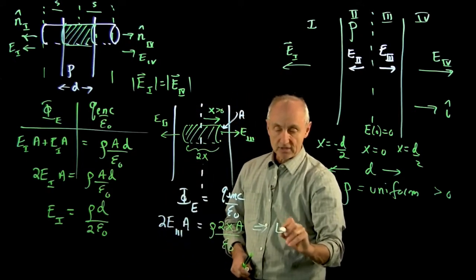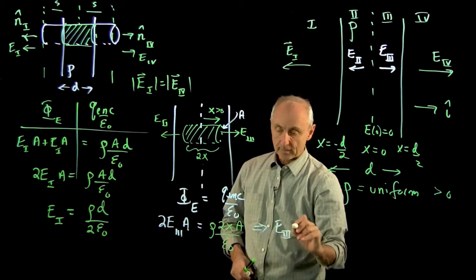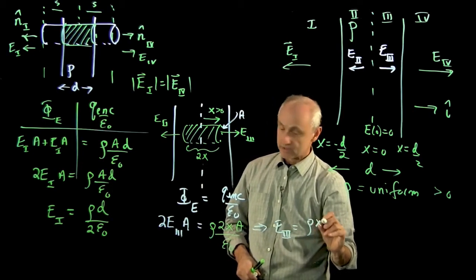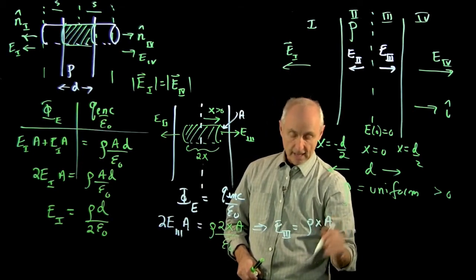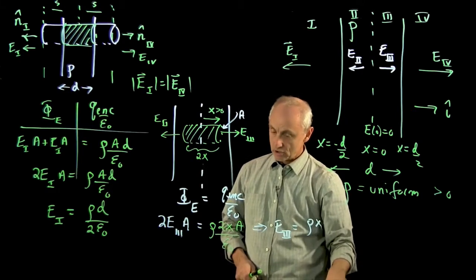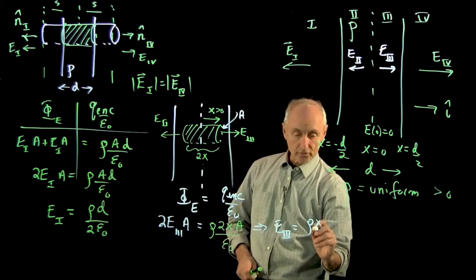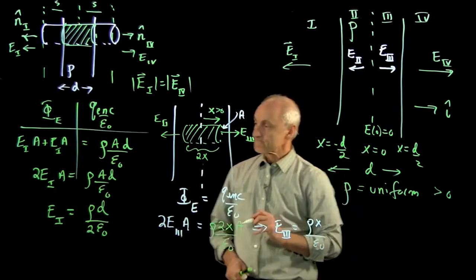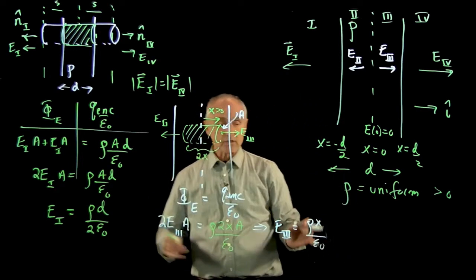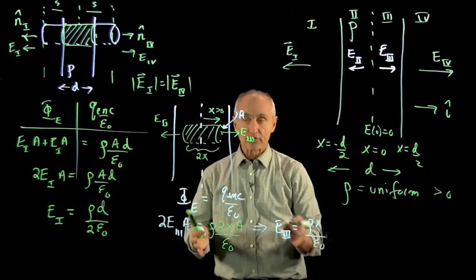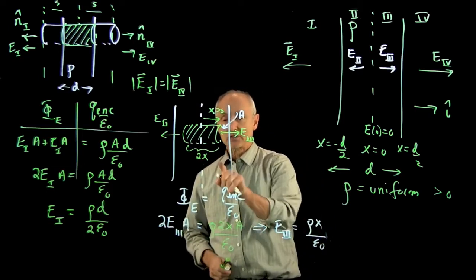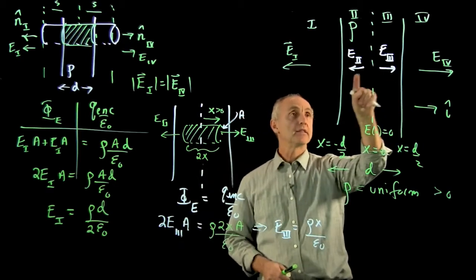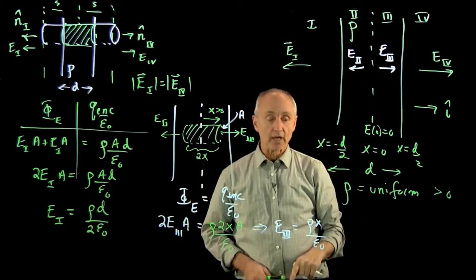And this tells us that our electric field is e3 is equal to rho x, a, a's cancel on both sides. So we get rho x over epsilon 0. And that is our electric field in regions 3. It points this way. The magnitude in region 2 is the other way.